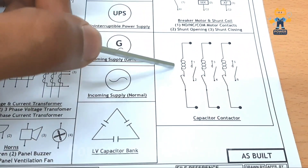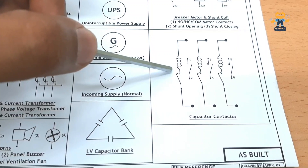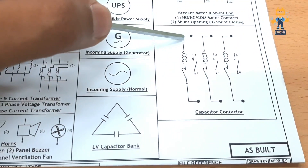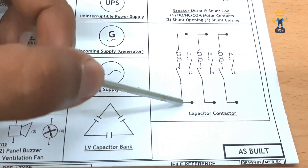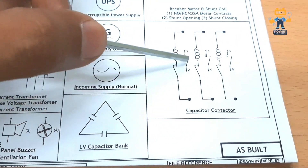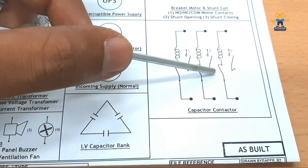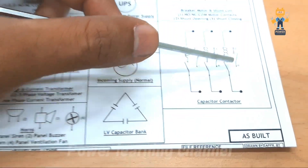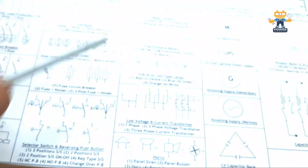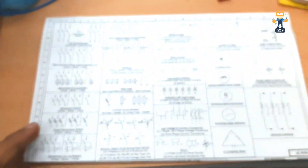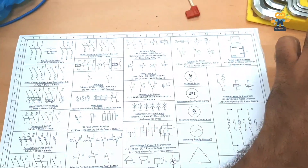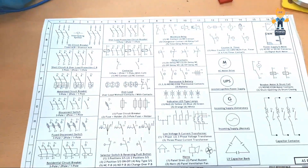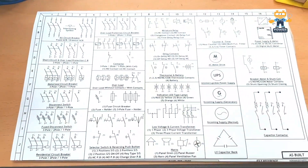Here we have a capacitor contactor symbol. These symbols show the capacitor contacts along with the normally open contacts.